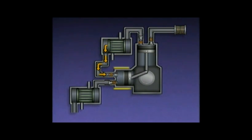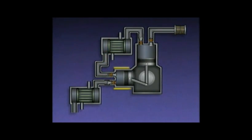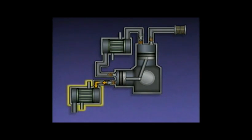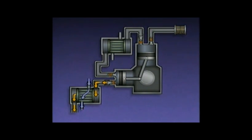In the second stage of this compressor, the air's pressure is increased to approximately 120 PSI. From the second stage, the compressed air is sent to the aftercooler, which is another shell and tube heat exchanger. As the compressed air passes through the tubes in the aftercooler, it is cooled by water flowing around the tubes.